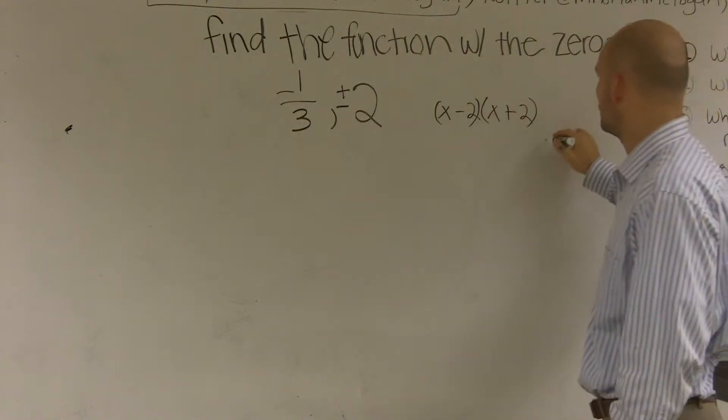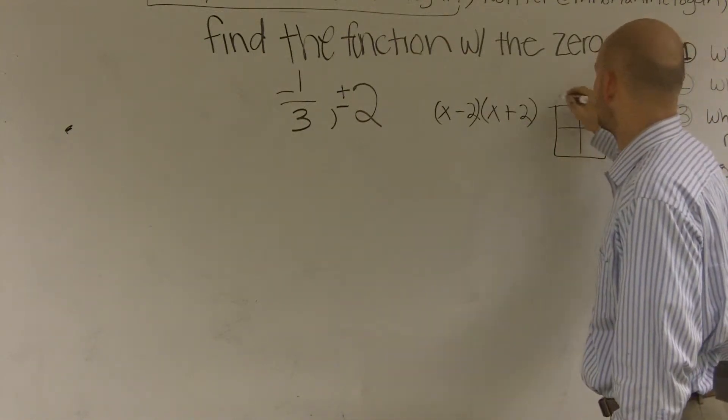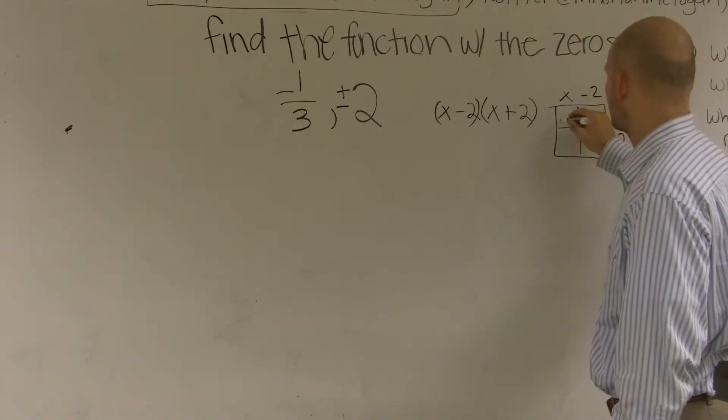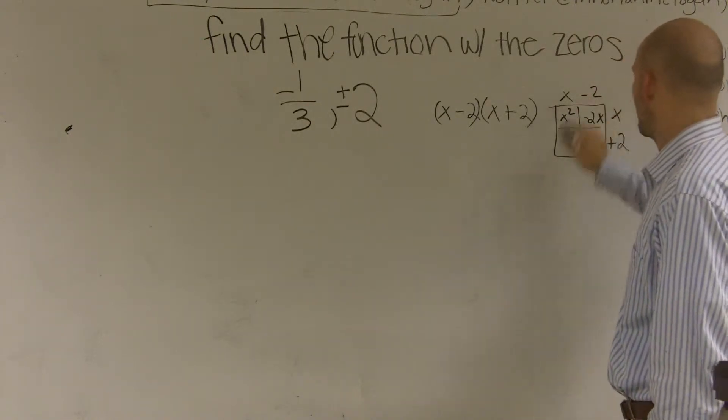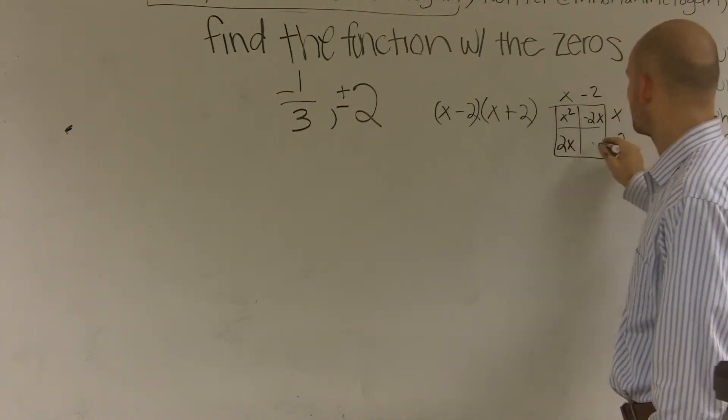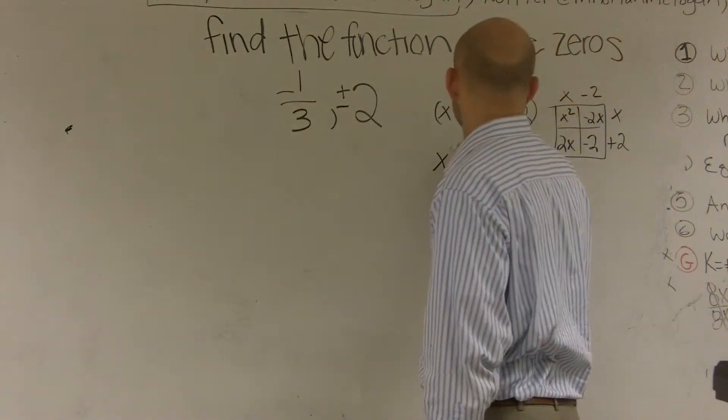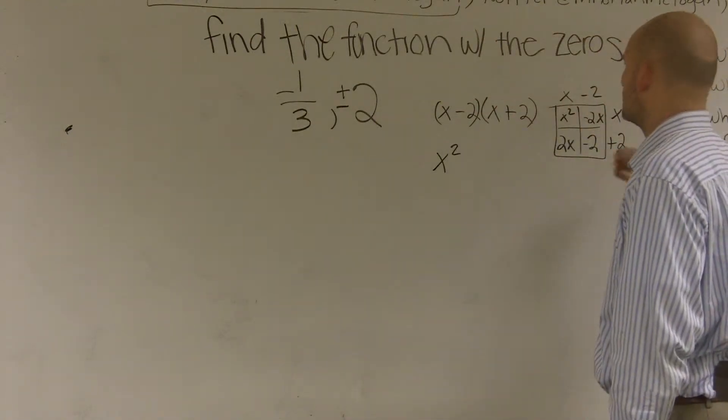So now I can do my math, right? Do the box method if you need to. x times x is x squared. Negative two times x is negative 2x. x times two is 2x. Negative two times two is negative four. So therefore, this turns out to be x squared. Isn't it a difference? Is it a difference of two squares?